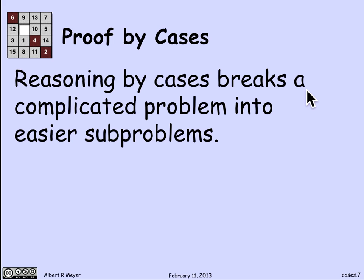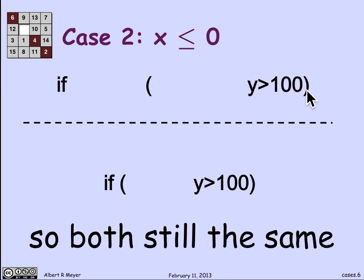So what I just figured out was that in both cases, these two expressions yield the same result, which means, and the only possible cases are that x is less than 0 or that x is greater than 0 or x is less than or equal to 0. So in all cases, they're the same. And we're done. That's why it's safe to replace the upper complicated expression by the lower less complicated expression.